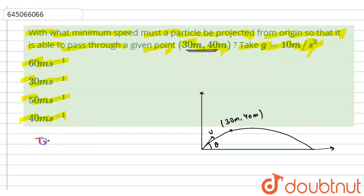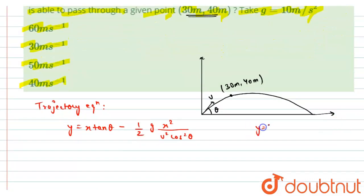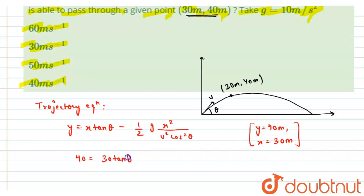The trajectory equation is given as y = x·tanθ − (1/2)·g·x² / (u²·cos²θ). We have y = 40 m and x = 30 m. Putting these values into the equation, we get: 40 = 30·tanθ − (1/2)·10·900 / (u²·cos²θ).